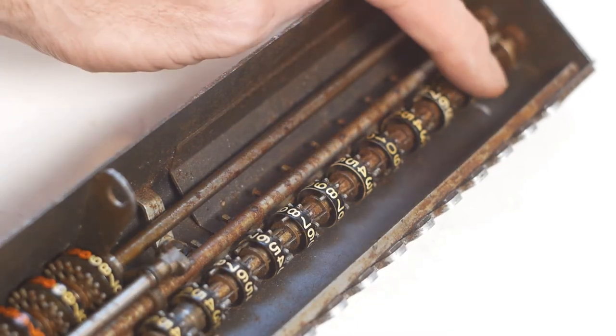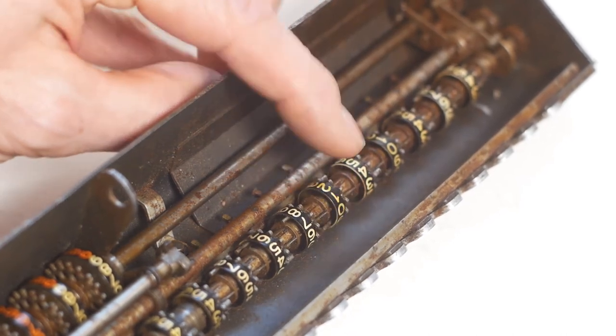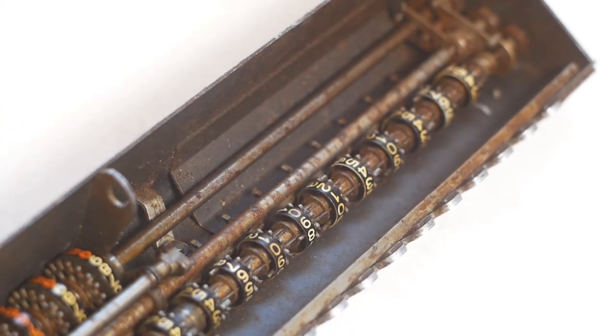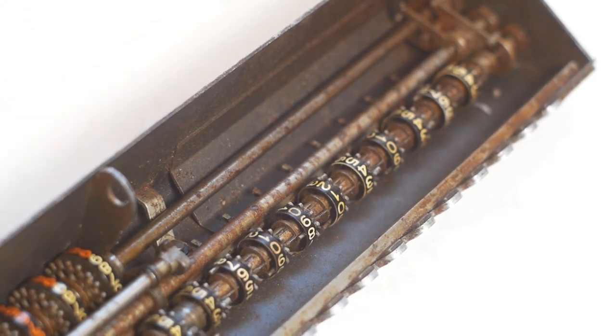There are still several seized wheels on the output register shaft which will need careful freeing off and also the split clearing mechanism which should slide when I move this lever is also rusted solid so the whole thing is going to have to come apart for cleaning.